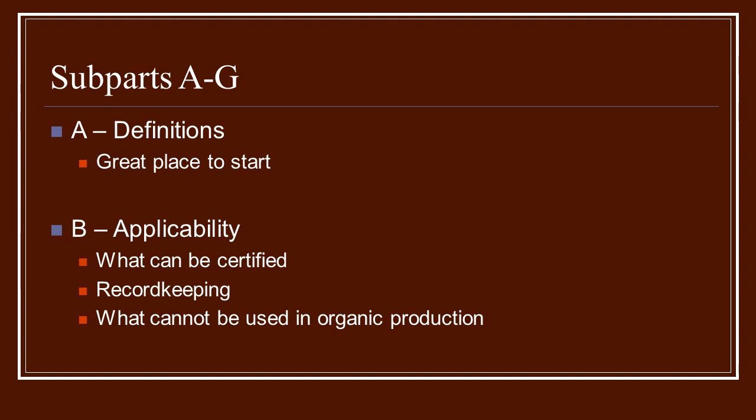Subpart B — applicability. It goes over what can be certified, what type of record-keeping needs to be done, and one of the important parts is what cannot be used in organic production. It's very important that you know what's okay, but even more important to know what is not okay, because once it is put in your field, it's three years before you can be certified organic. So very important to know what is not okay.